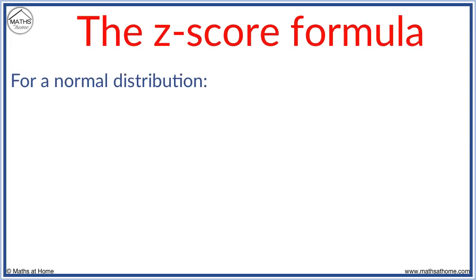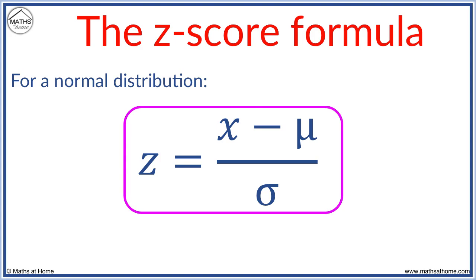The formula to calculate a z-score for a normal distribution is z equals x minus mu over sigma, where z is the z-score, mu is the mean, and sigma is the standard deviation.